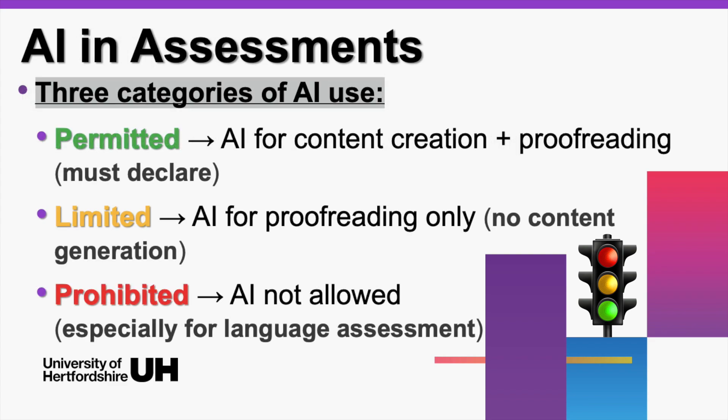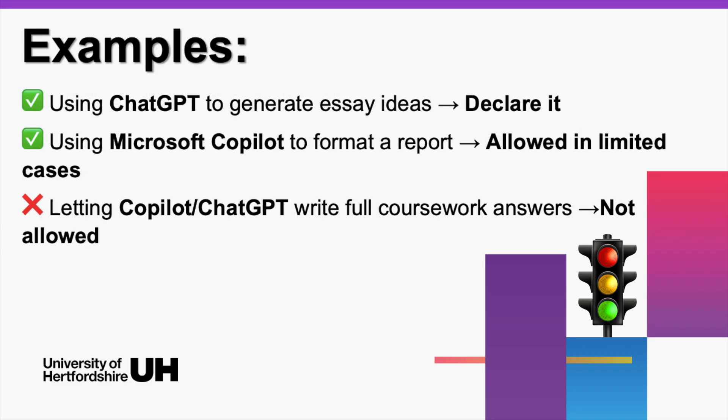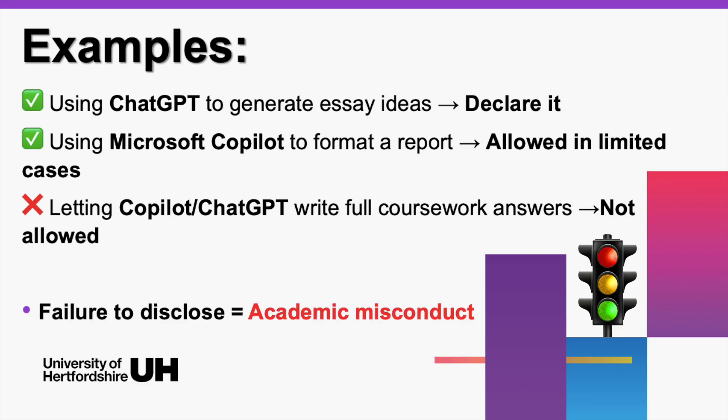Prohibited — red light. AI is not allowed at all, especially in language assessments. For example, if you use ChatGPT to write an essay in an English proficiency test, that's a big nope — that's your own language skills being tested, not AI's. And here's the most important thing: if you don't declare AI use, even when it's allowed, it's academic misconduct. Serious stuff. Always check your assessment brief first.